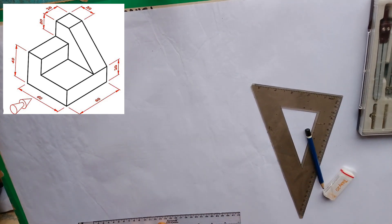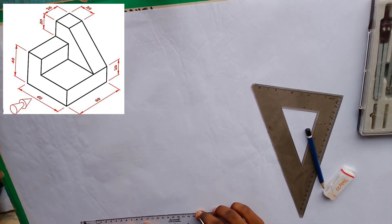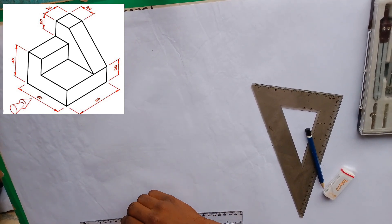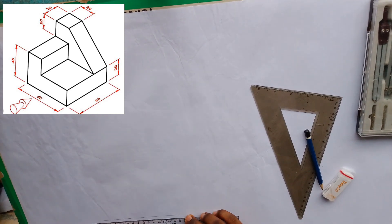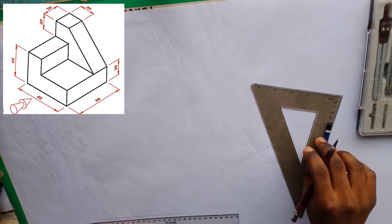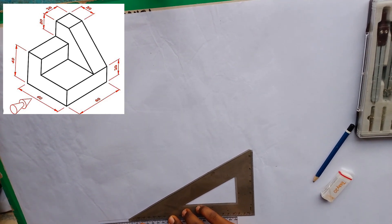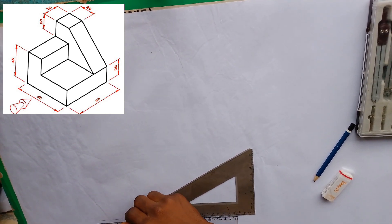When doing an isometric drawing, we'll always start with your horizontal baseline, which can be of any length, and we'll pick a midpoint at any point on the line. After that, we'll use our 30-60 degree set square to project 30 degree lines from that midpoint.